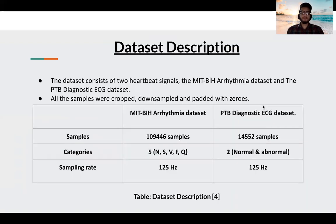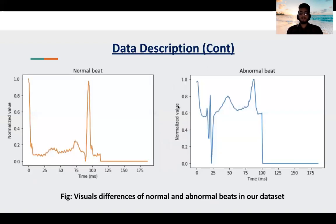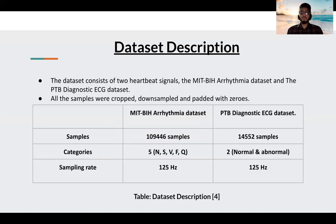The dataset consists of two heartbeat signal datasets: the MIT-BIH Arrhythmia Dataset and the PTB Diagnostic ECG Dataset. All samples were cropped, downsampled, and padded with zero. The MIT-BIH Arrhythmia Dataset has 109,446 samples in total with five classes: N for normal, S for atrial premature, V for ventricular escape, F for fusion of ventricular and normal, and Q for paced or unclassified. The PTB Diagnostic ECG Dataset has 14,552 samples with two categories: normal and abnormal. Both datasets were collected at a sampling rate of 125 Hz.